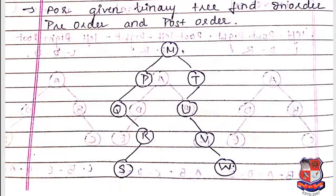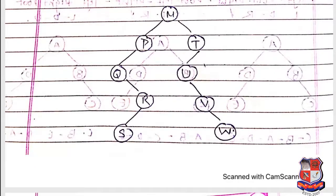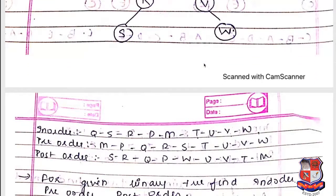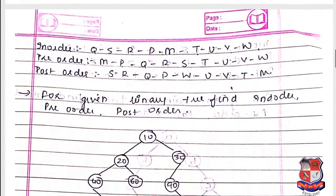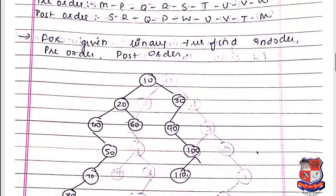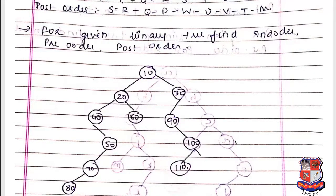There is another example for practice. Now let us move to a new concept: given a traversal sequence — in-order, pre-order, or post-order — we can reconstruct and generate the binary tree from that sequence.